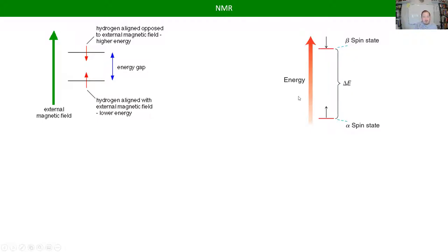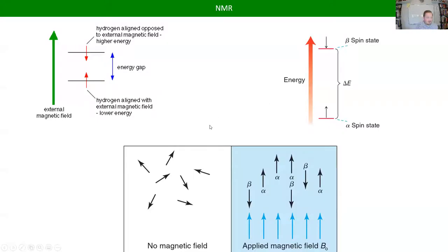If you keep the sample in the magnetic field long enough, all those individual nuclei that were randomly pointing in random directions will eventually line up — most of them facing with the magnetic field, but a certain number will face 180 degrees into the magnetic field.